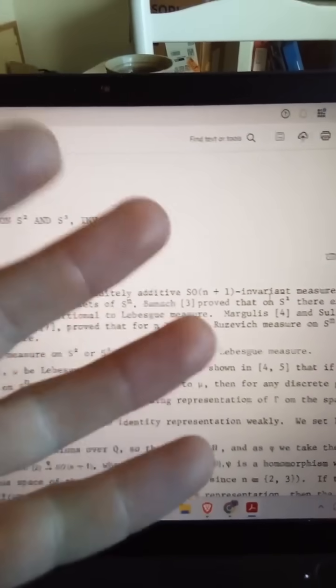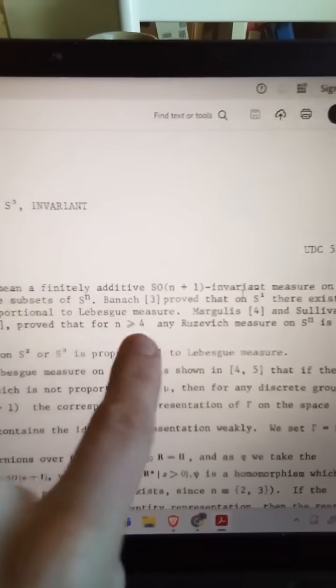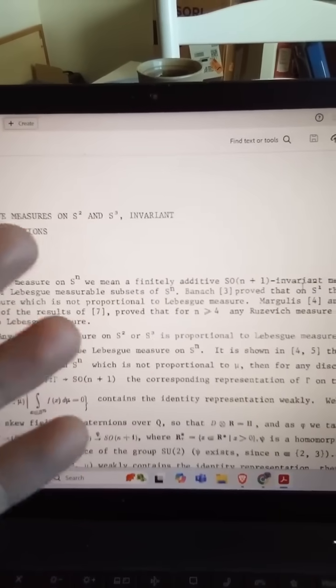The claim is then that this measure is proportional to the Lebesgue measure. It's actually false for n equals one, this is known previously, and it's true for n greater than or equal to four, again perhaps by some more classical methods.